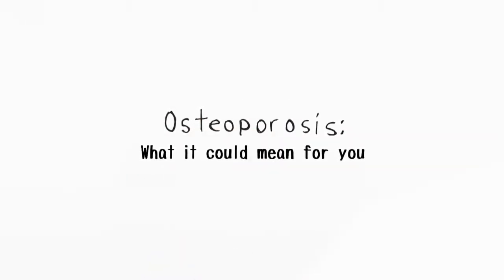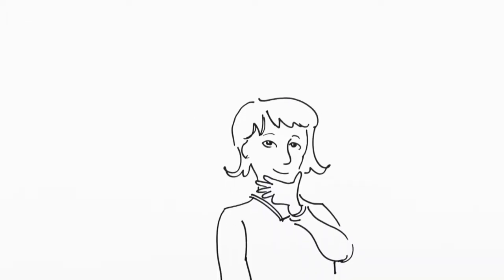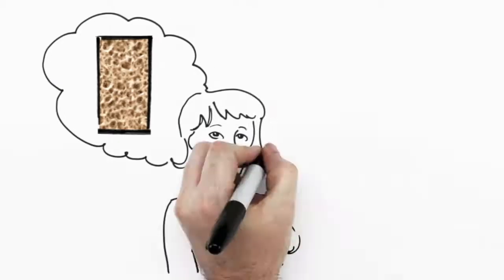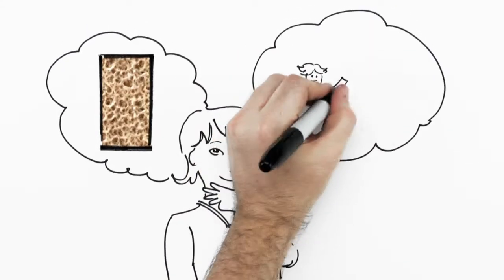Osteoporosis. What it can mean for you. When your bones first develop, they're strong. Thanks to a matrix of tissue that supports them, your bones can withstand minor falls and accidents without breaking.